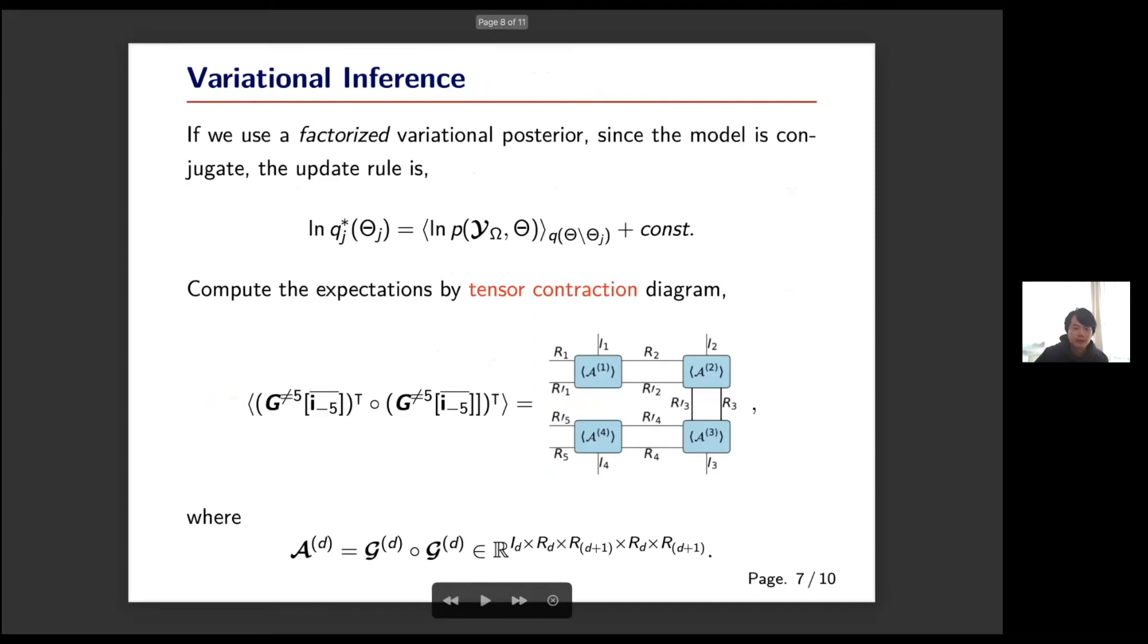In this paper we mainly use the variational inference algorithm. Since our model is conjugate, the factorized variational posterior has the following closed form. The most difficult part to compute the posterior is to compute some of the expectations. Fortunately in the tensor ring format we found that all of the expectations can be computed efficiently by using tensor contraction diagrams.